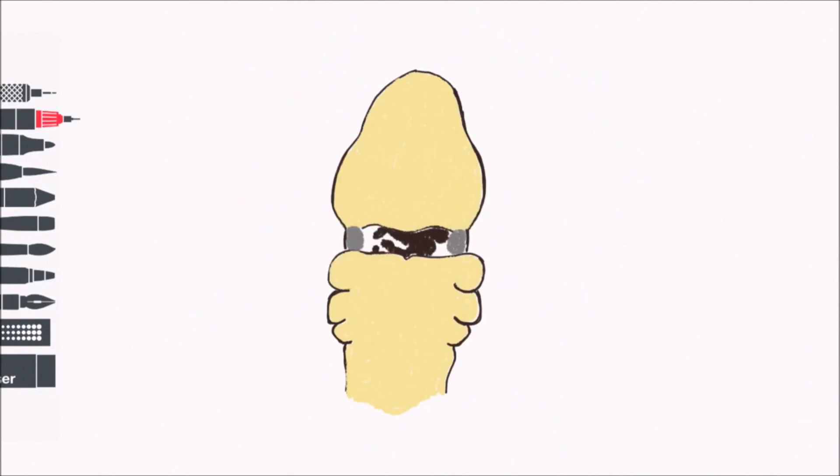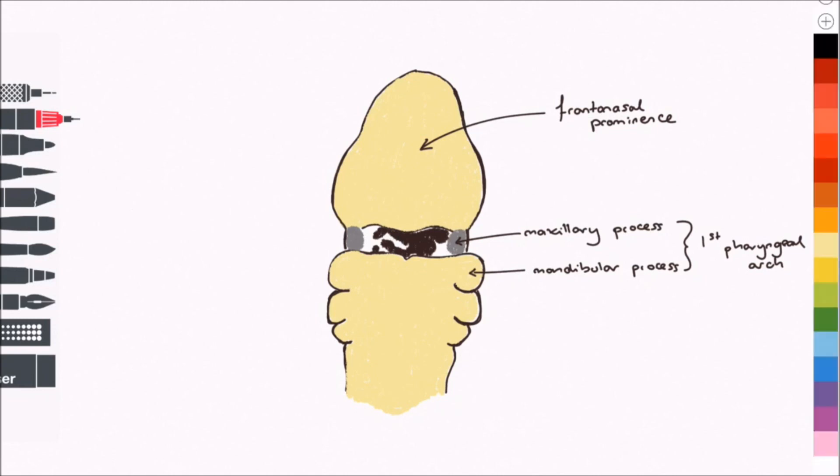Let's look at the embryo from a frontal view. The face forms from a fusion of five swellings: 1. Frontonasal prominence in the midline, 2. Maxillary processes, one each side, and 3. Mandibular processes, one each side. Failure of fusion results in various facial abnormalities.